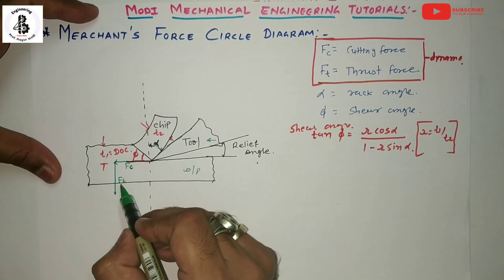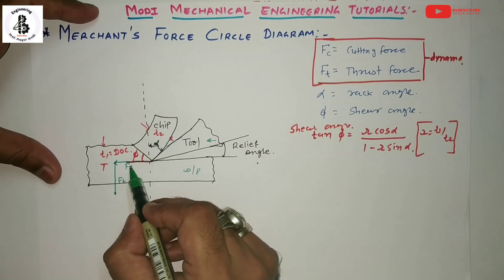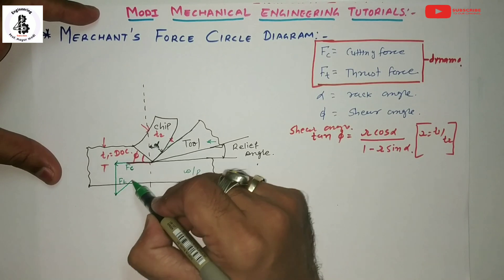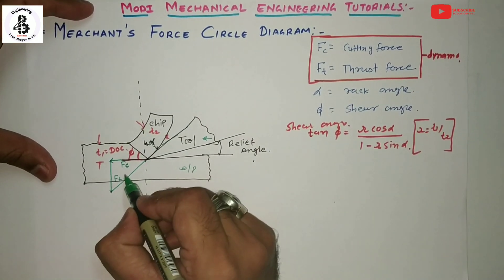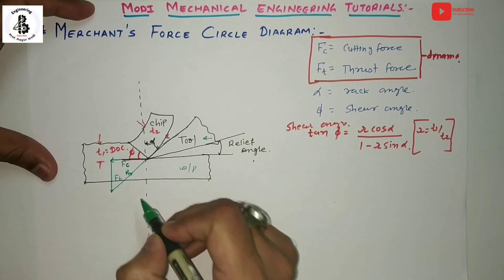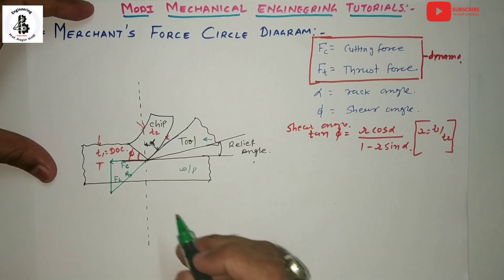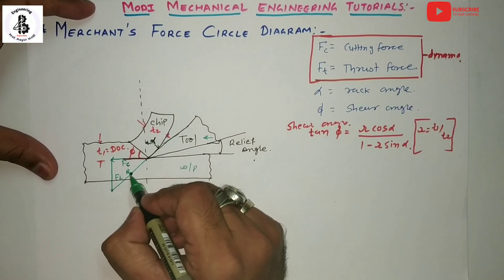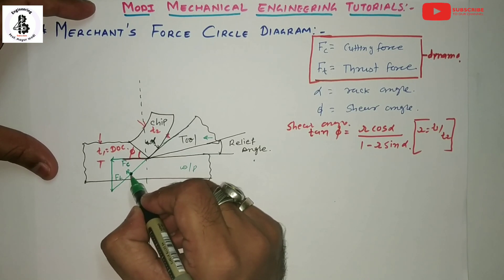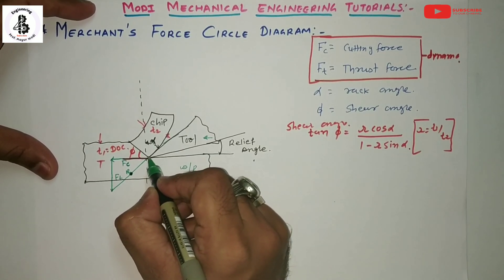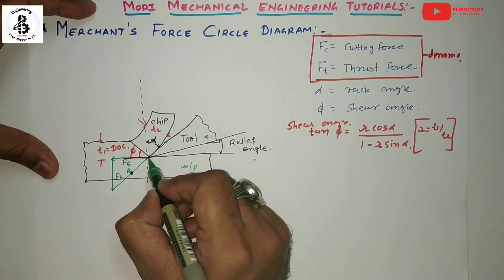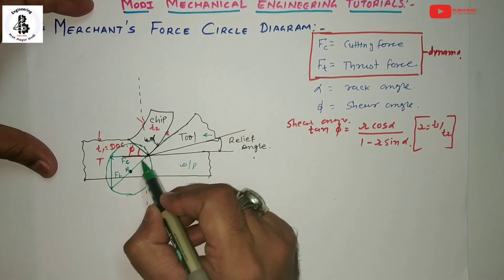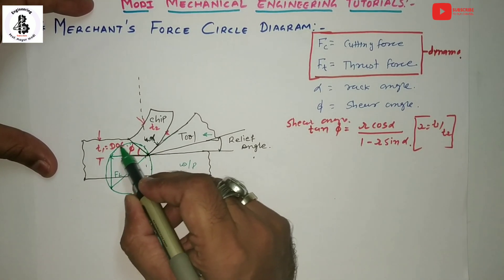From FC and FT obtained from the dynamometers, you find the resultant force R. Take the center of this resultant, measure the distance from this center point to the tool tip, and draw a circle with that radius.